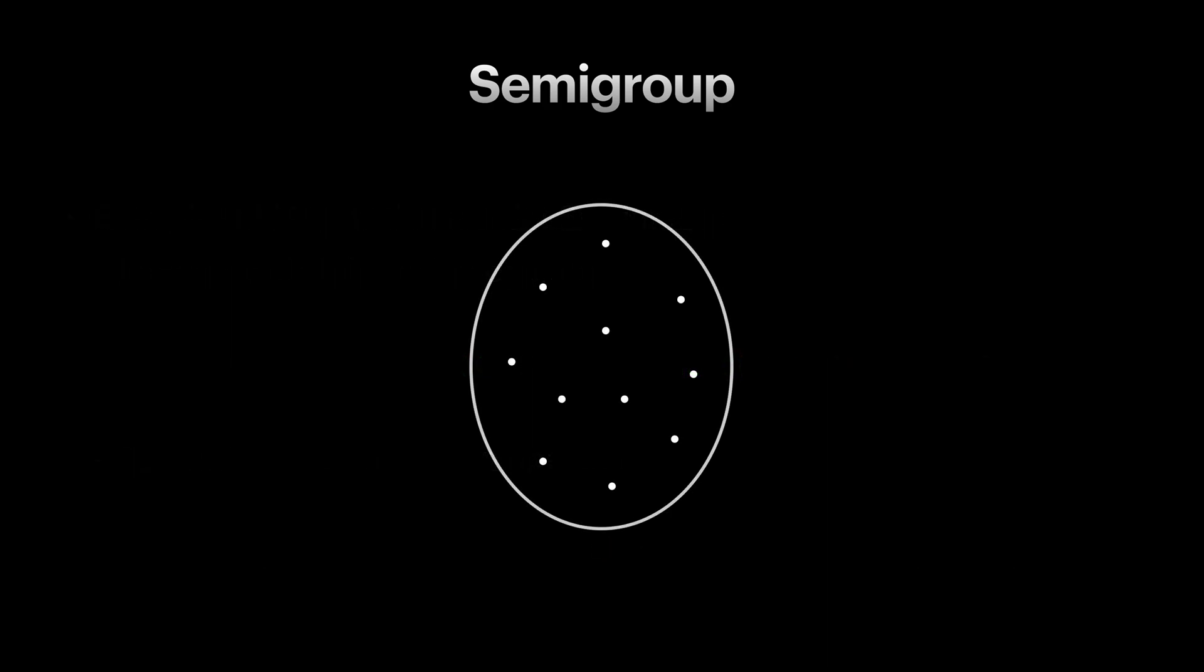As I mentioned, semigroup provides us with opportunity of doing things in parallel as well. Imagine we have a series of concats in this order. To make it easier, since we already know integers with addition operation is a semigroup, let's use that as an example.